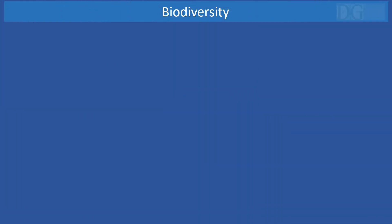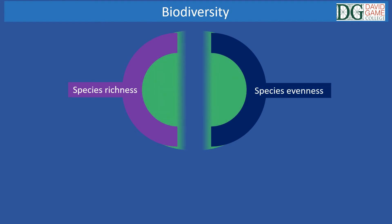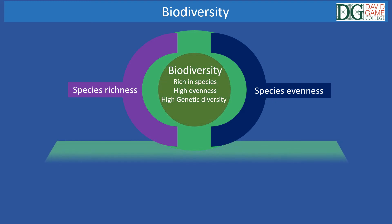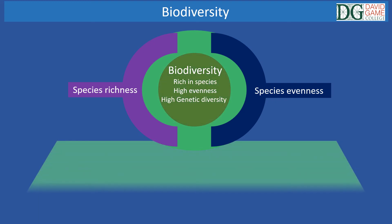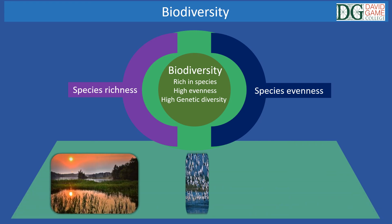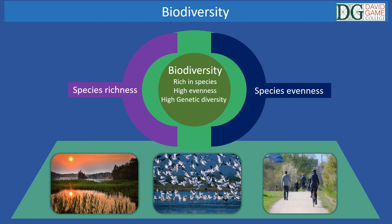In conclusion, species richness is the number of species living in a given area, while species evenness is the number of individuals of each species within a community. Biodiverse ecosystems are rich in species, with high species evenness and high genetic diversity. Maintaining biodiversity within the various ecosystems is important for the natural environment, for all living organisms, and for humans.